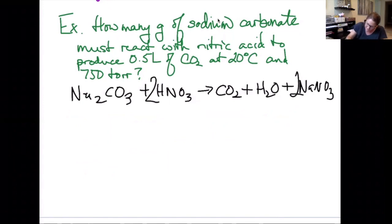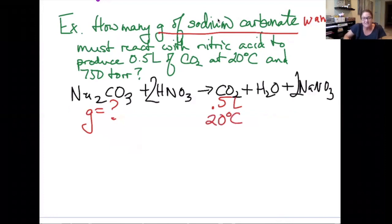I'm being asked for how many grams of sodium carbonate, so that's my want. I like to write it underneath. Must react with nitric acid to produce 0.5 liters of CO2, so that's my given, at a temperature of 20 degrees Celsius and 750 torr. Which one do I have enough information to get the moles of? I have enough information to get the moles of CO2.